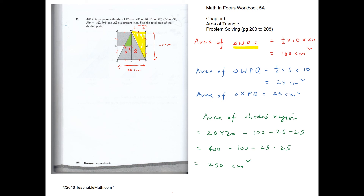By symmetry, area of triangle XPB is also 25 cm squared. So the shaded area equals 20 times 20 minus 100 minus 25 minus 25, giving an answer of 250 cm squared.